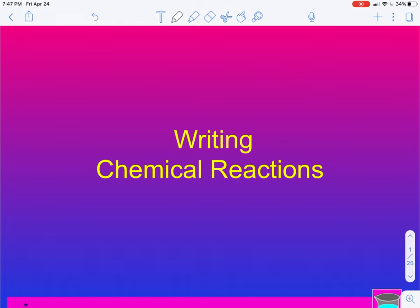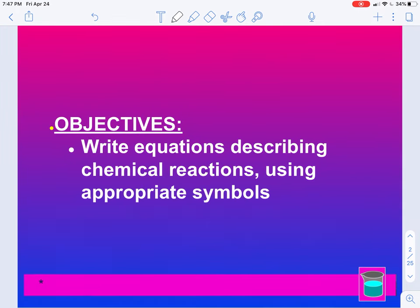So what we're going to do is start talking about writing chemical reactions. The first part will be writing chemical reactions from word examples, and then the next thing we'll learn about is how to write chemical reactions and predict their products. The first thing we're going to look at is writing equations describing chemical reactions using appropriate symbols.